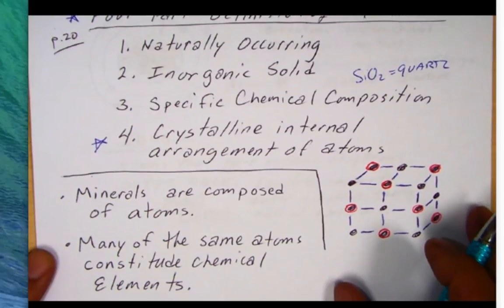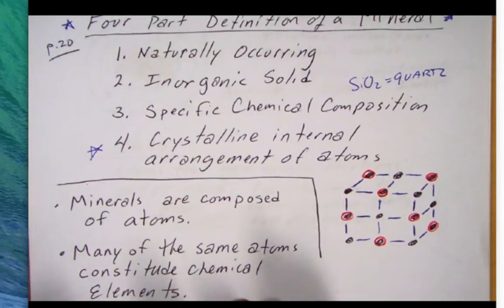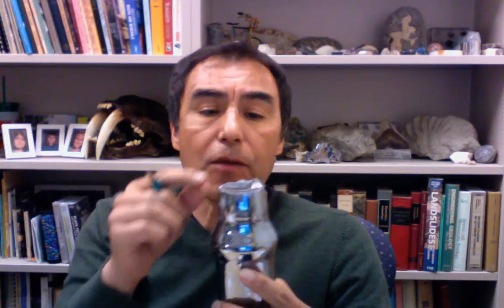Minerals are composed of atoms. Many of the same atoms constitute chemical elements. So in other words, if I have a whole bunch of atoms, I'm going to have a chemical element. Back here, I actually have silicon metal. This is the element silicon. If I could take one little tiny atom, which measures about an angstrom in diameter, which is about 10 to the negative 8 centimeters, enormously small, that one atom would still be silicon. It would have all the properties of this silicon metal.